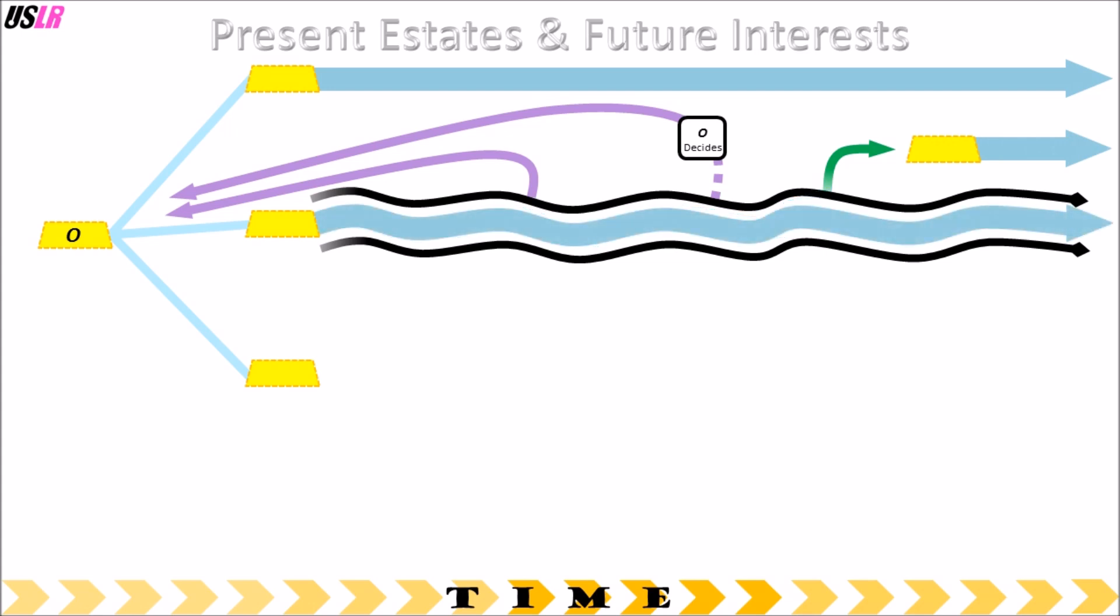The last way that O can transfer land involves a time restriction and some of the concepts we have just mentioned. O can transfer land for a period of time, any number of years or for a lifetime. And when the time expires, the land has five possible destinations.